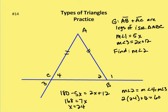So 180 degrees minus angle 1 is going to be equal to the measure of angle 3. Since 180 minus the measure of angle 1 equals the measure of angle 2, and angle 2 equals the measure of angle 3, I can say that 180 minus the measure of angle 1 equals the measure of angle 3. So now I have 180 minus 5x equal to 2x plus 12. I solve for x and get x equals 24.